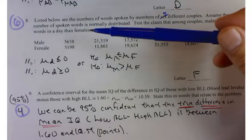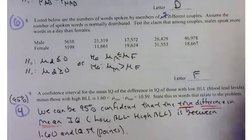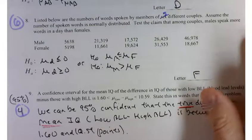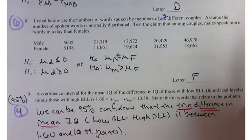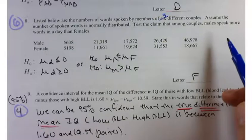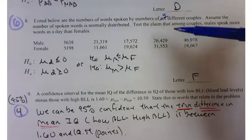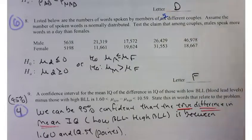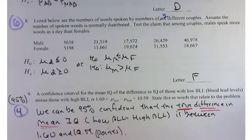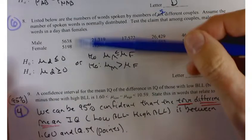This one is matched pairs. Listed below are the number of words spoken by members of five different couples. Tested to claim that among the couples, males speak more than females. How come this is a matched pair as opposed to just a regular two population mean? Yeah, they're couples. They're in the same marriage. So one's going to be related to the other one.